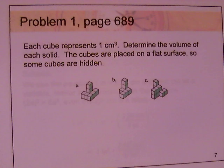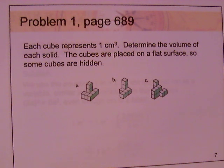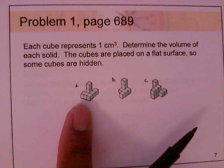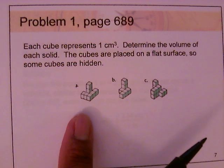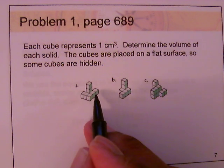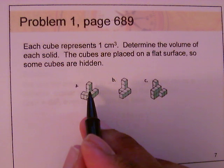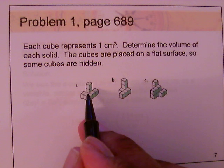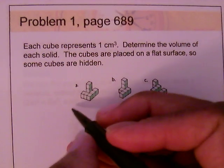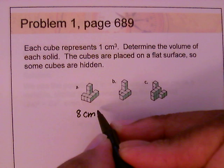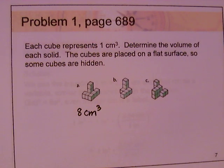Let's look at problem number one on page 689. Each cube represents one cubic centimeter; determine the volume of each solid — the cubes are placed on a flat surface so some are hidden. For part a, counting visible and hidden cubes: one through seven are visible, but there's a cube behind the second one, giving a total of eight cubic centimeters.